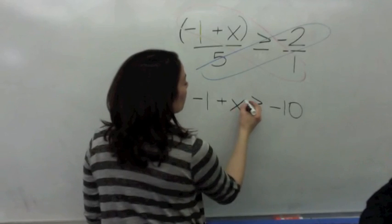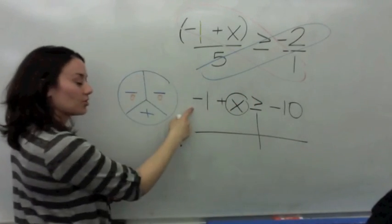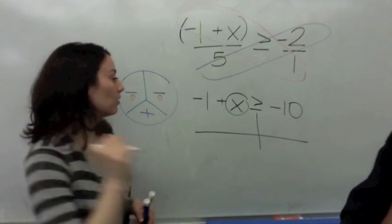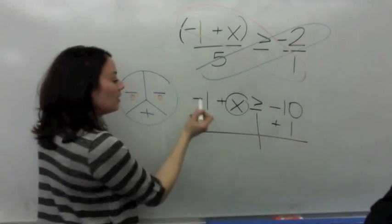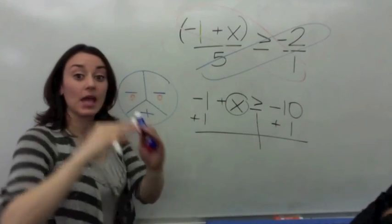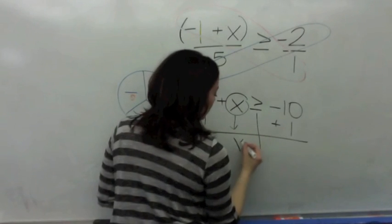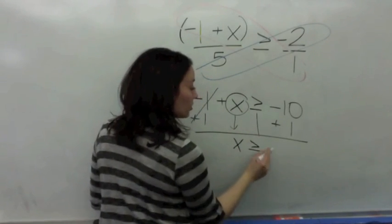So, you circle X. That's what you want to find. Then, you draw a T-bone steak. You ask yourself, what is the opposite of negative one? Positive one. Good job. Positive one. Add one to both sides. Negative one and positive one make... Zero. Zero. Bring down the X. And, the inequality is greater than or equal to.